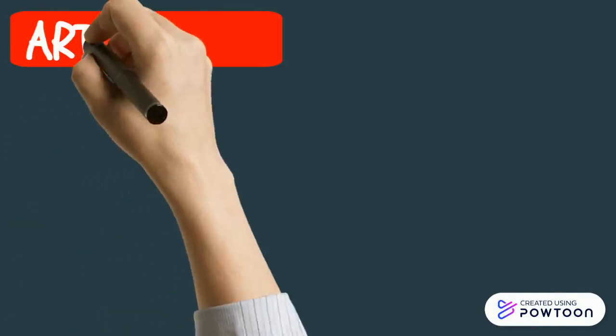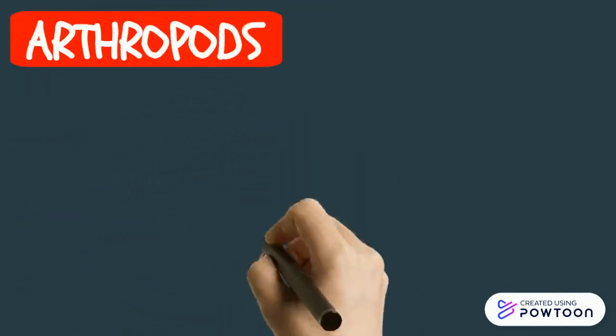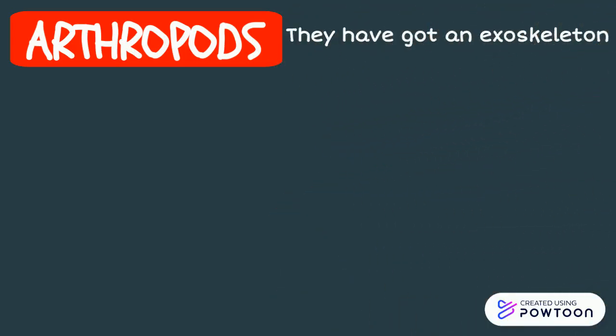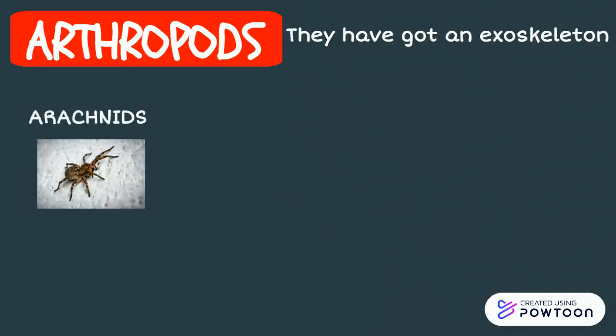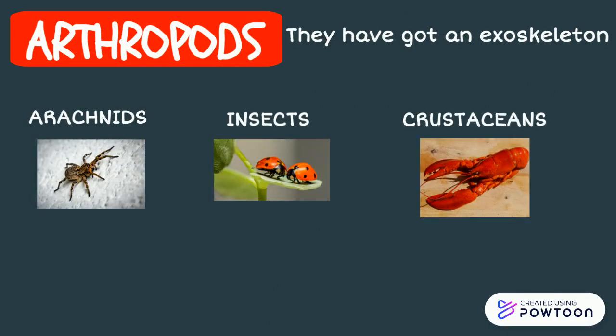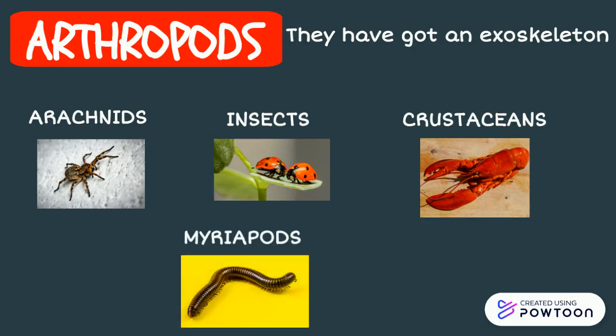Let's talk about arthropods. The main characteristic of this group is that they have got an exoskeleton. In this group you can find arachnids like spiders, insects like ladybirds, crustaceans like a lobster, and myriopods like centipedes.